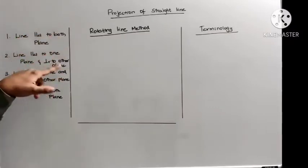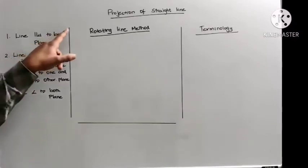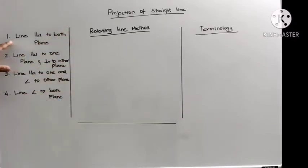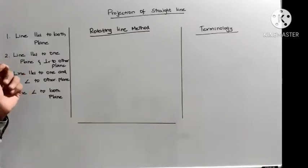One common thing in these three cases is that during the projection, you will be seeing the true length either in the front view or the top view. In all these three cases, for instance, in case 1 you will see the true length in both front view and top view. In case 2, you will see the true length in one view and a point in the other view.